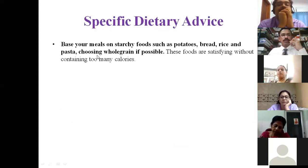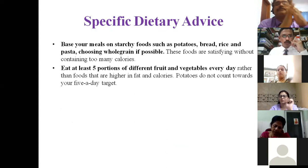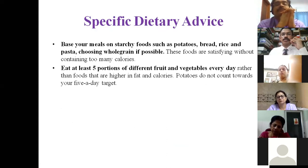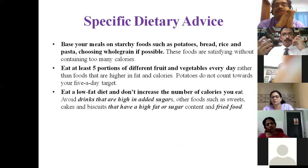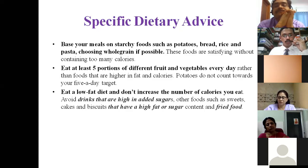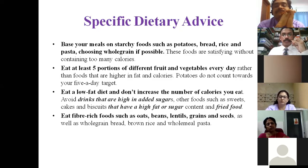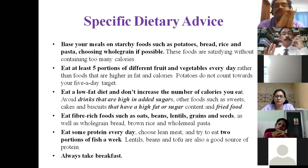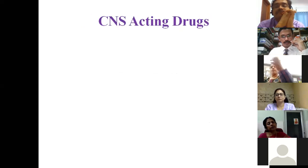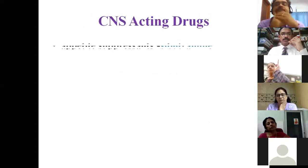Specific dietary advice: the diet should be based on starchy food with at least five portions of fruits and vegetables. Low fat diet is advised; drinks containing added sugar like processed food, cold drinks, and ice cream should be avoided. Fiber-rich diet should be encouraged as it reduces lipid levels. Some protein should be taken, and patients should be told not to skip breakfast — skipping breakfast increases ketone production, which is ultimately converted into fat.